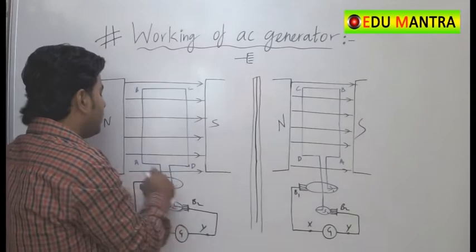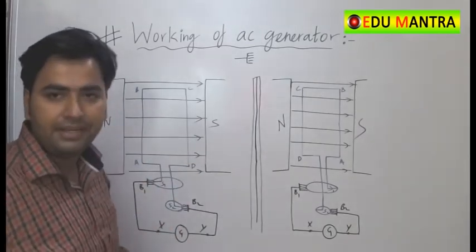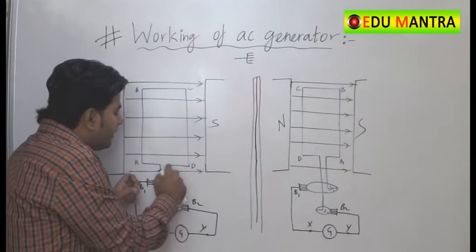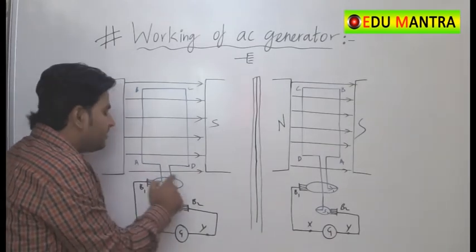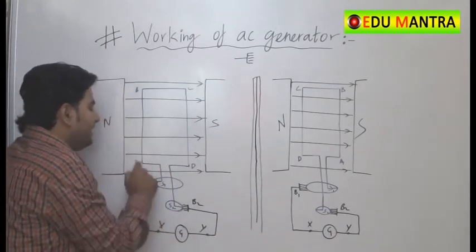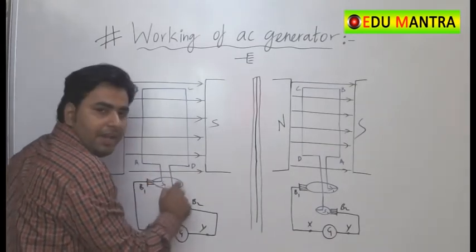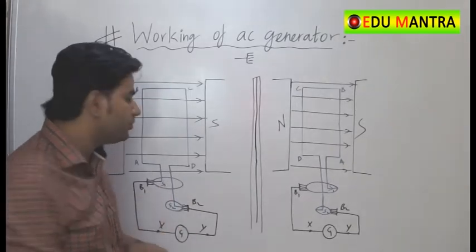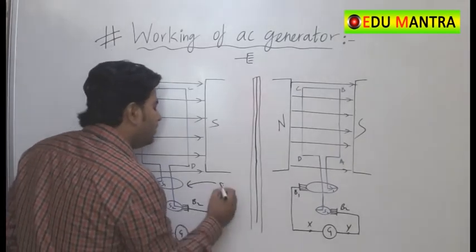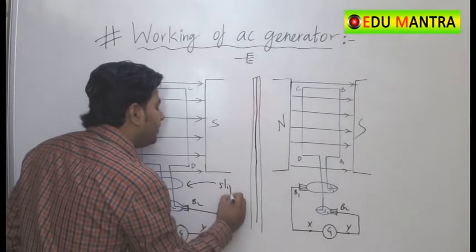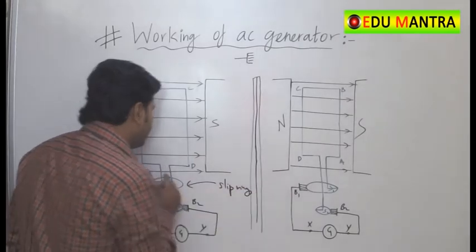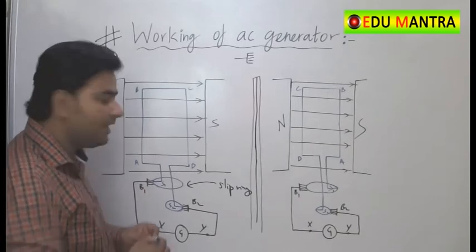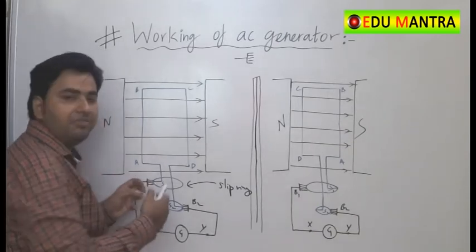In that space, we take a rectangular coil: A, B, C, D. These rectangular coil sides, which are in front of the rings, will be attached to the slip rings. The slip rings are connected to the conducting brushes.